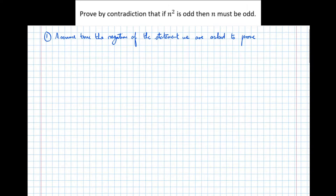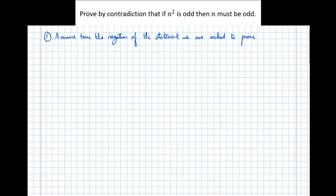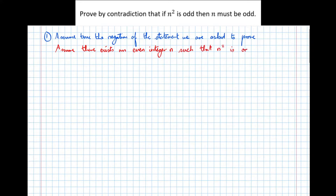So the negation of 'if n squared is odd, then n must be odd' — to find the negation, we think about what we need to show to disprove that statement. If we found a single value of n that was even such that n squared was odd, that would disprove it. So we assume there exists an even integer n such that n squared is odd.